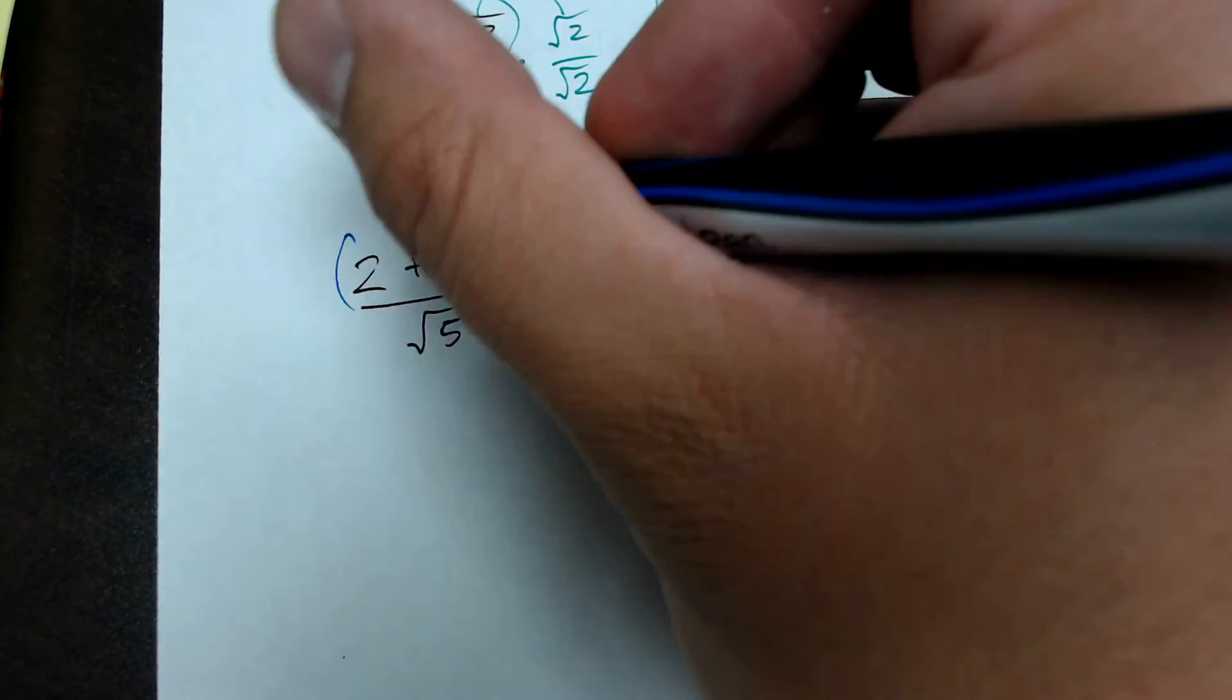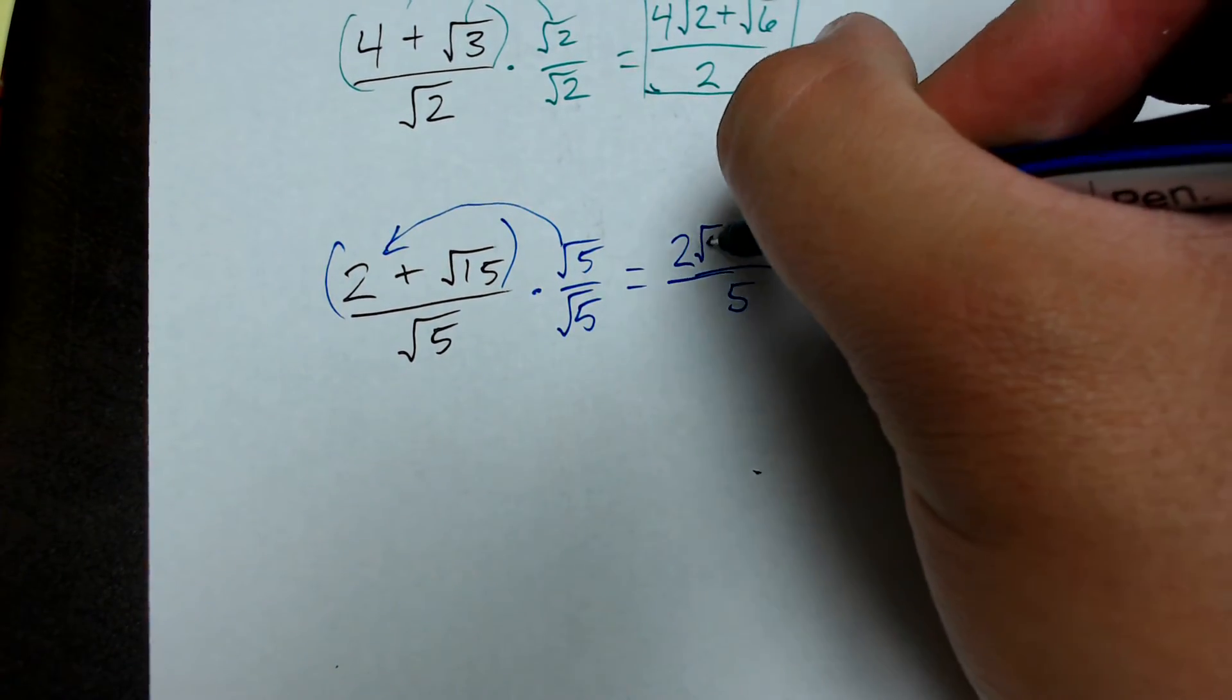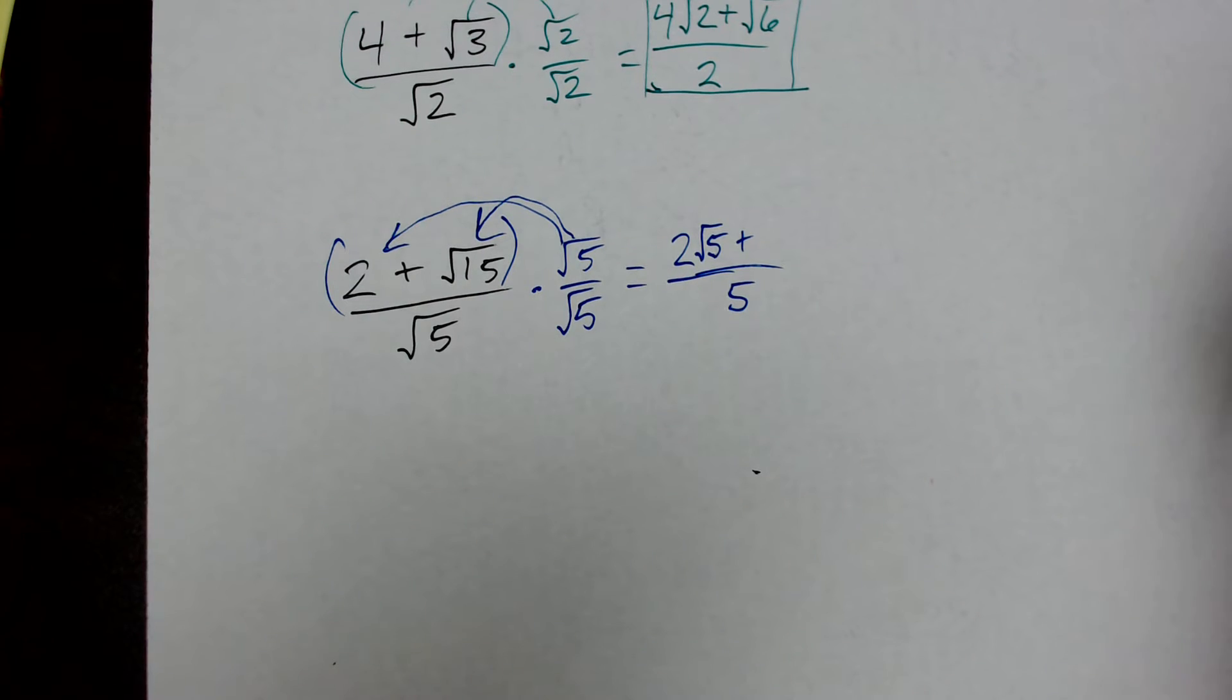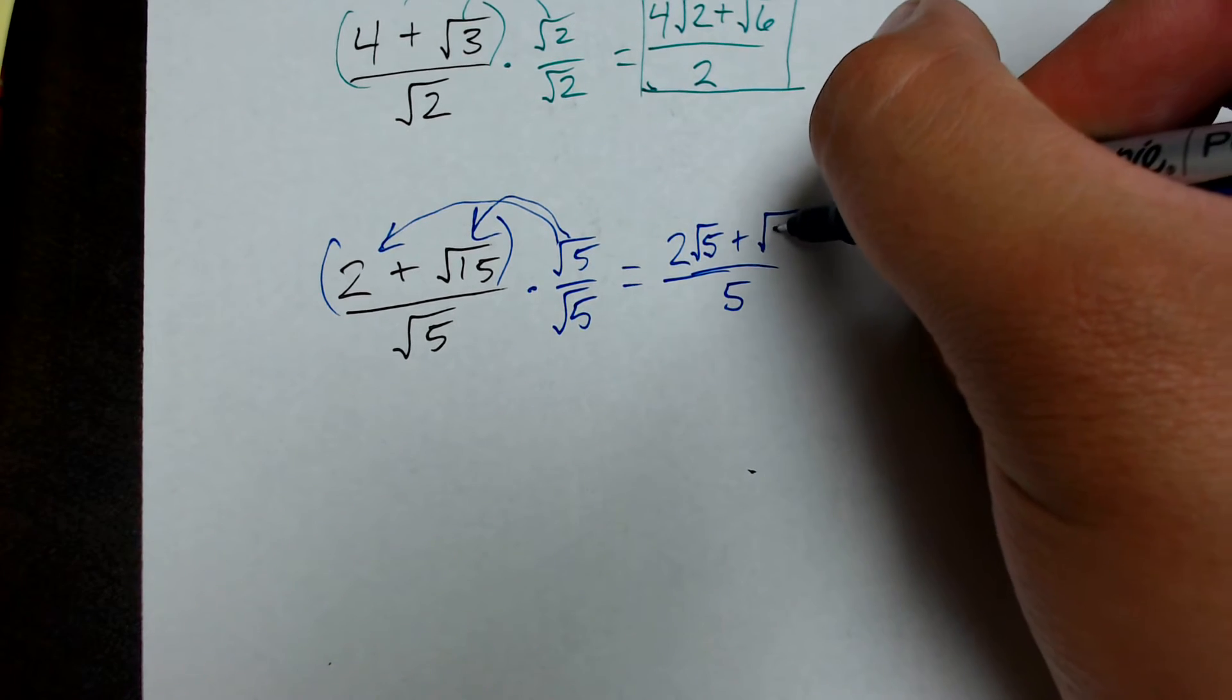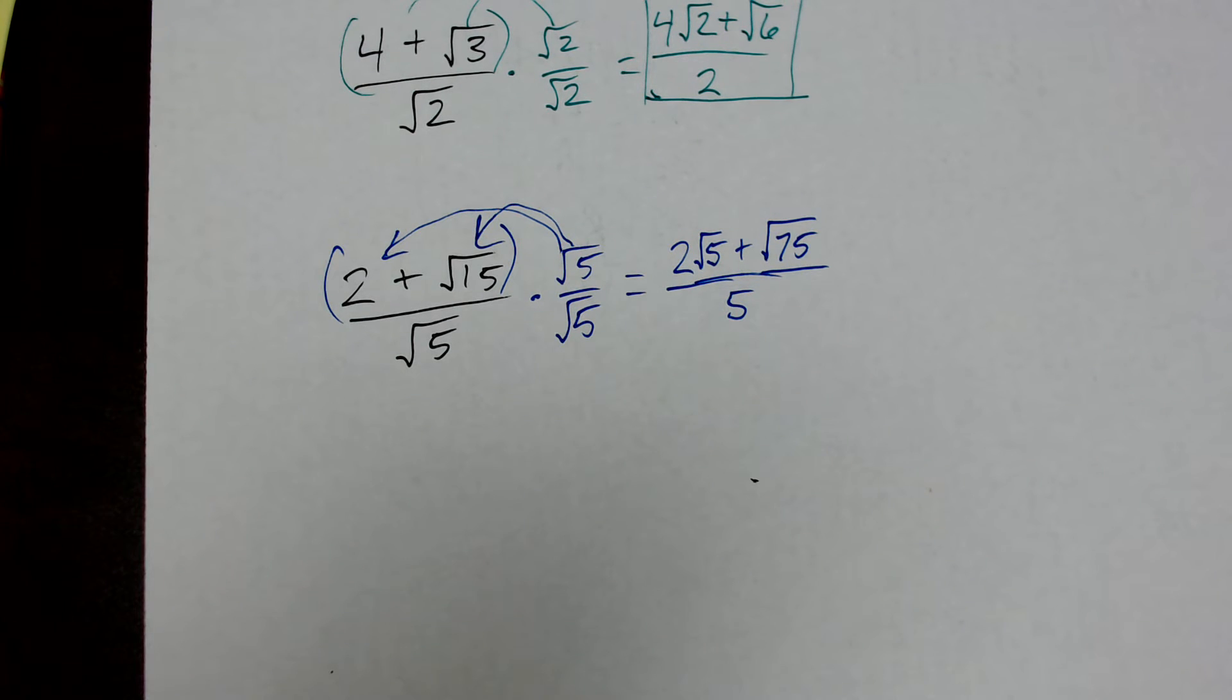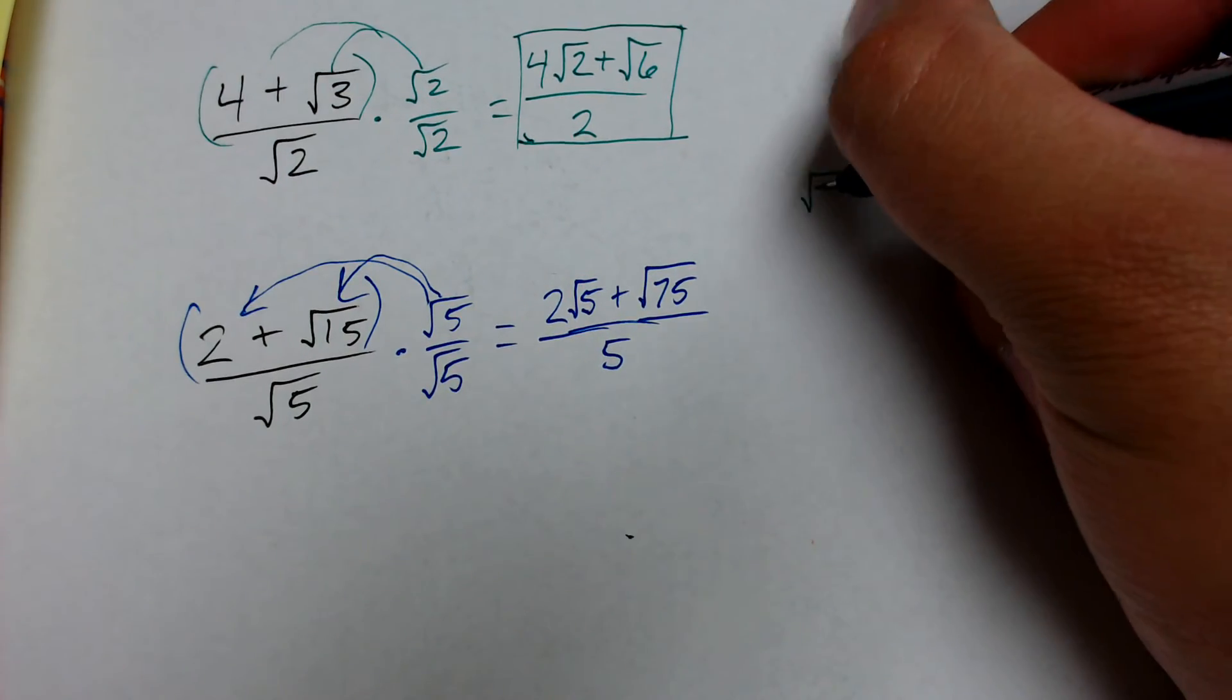The numerator, again, I have to distribute because of that plus sign. So, square root of 5 times 2 becomes 2 root 5. I put my plus sign. And then square root of 5 times square root of 15. Well, 5 times 15 is 75. So, now it becomes plus the square root of 75. Now, the reason why this cannot be our final answer is because the square root of 75 can be factored. So, we want to simplify this number as much as we can. So, I'll go ahead and factor the square root of 75.